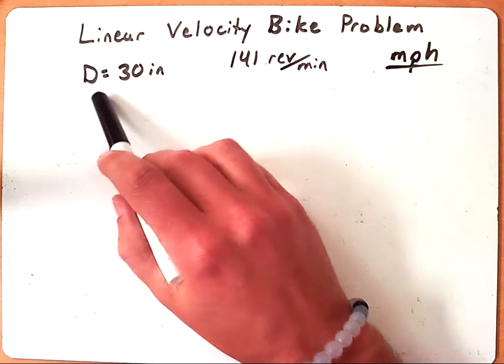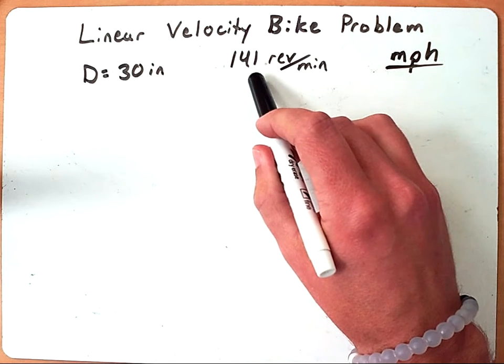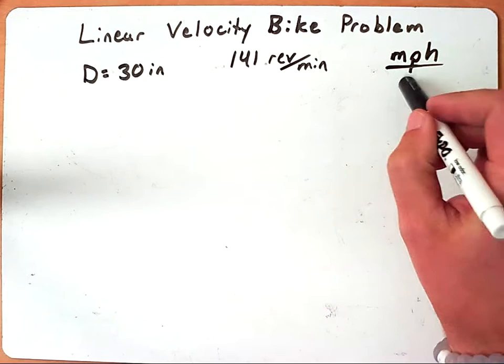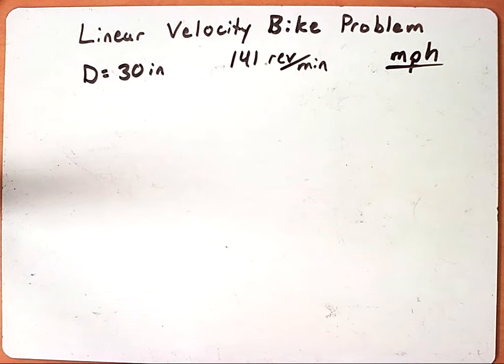So they've given us that the diameter of our tire is 30 inches, that the tire is going 141 revolutions per minute, and they want us to tell them the miles per hour that the bicycle is going.